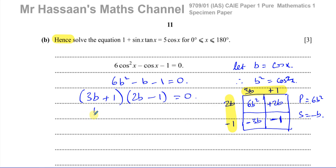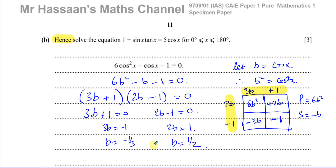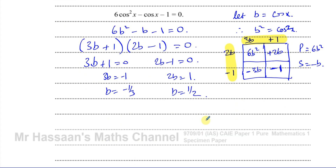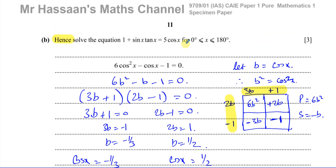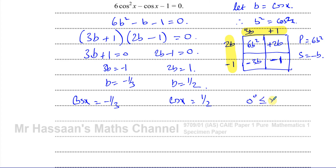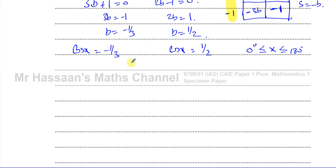Setting each factor to zero: 3b plus 1 equals 0 gives b equals minus one third; and 2b minus 1 equals 0 gives b equals one half. Remember, b equals cosine x, so cosine x equals negative one third and cosine x equals positive one half. We need to find x in the range 0 to 180 degrees, both endpoints included.